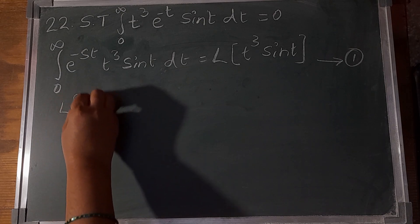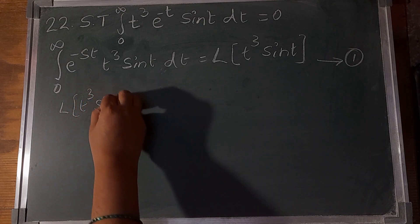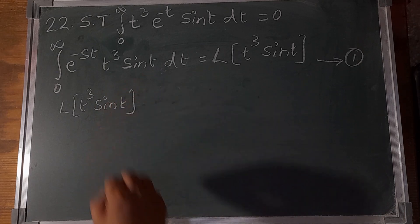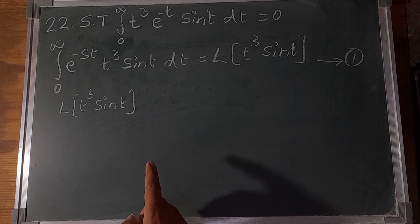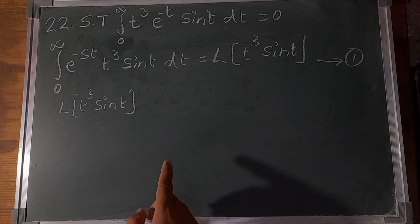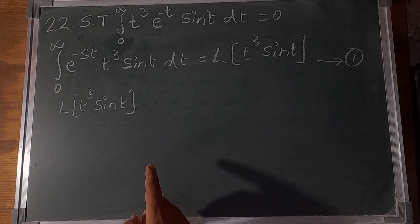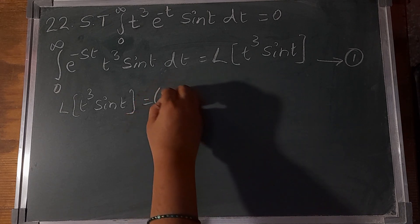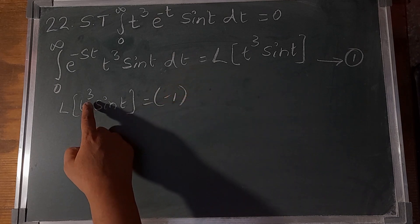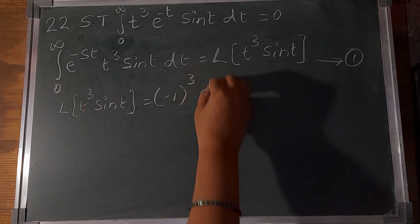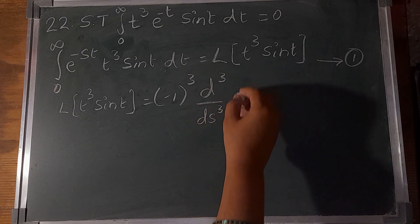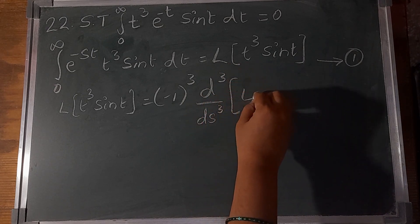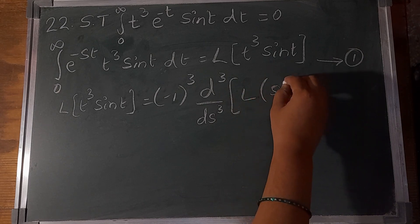The Laplace transform of t³ sin(t), using property 2 of the Laplace transform, equals (-1)^n times the nth derivative with respect to s of the Laplace transform of sin(t), where n equals 3.